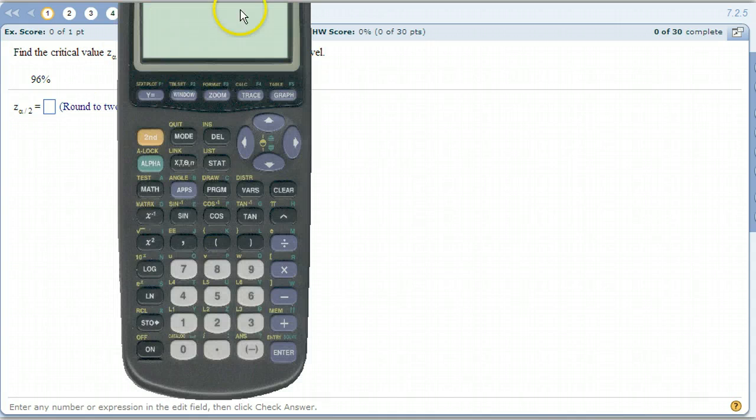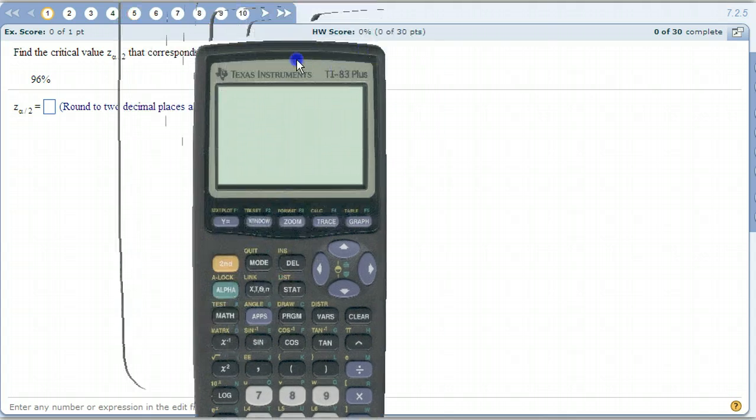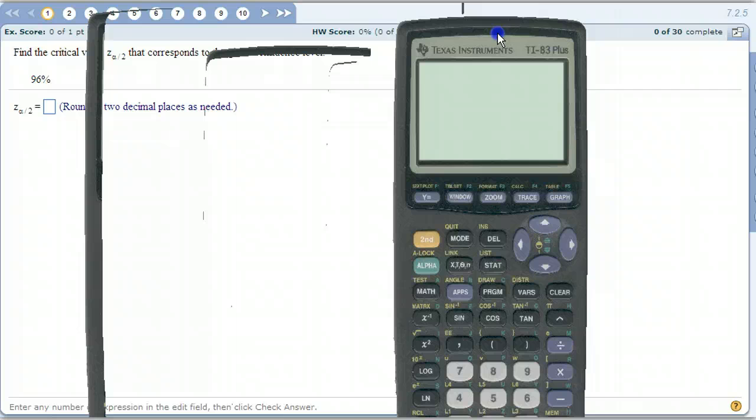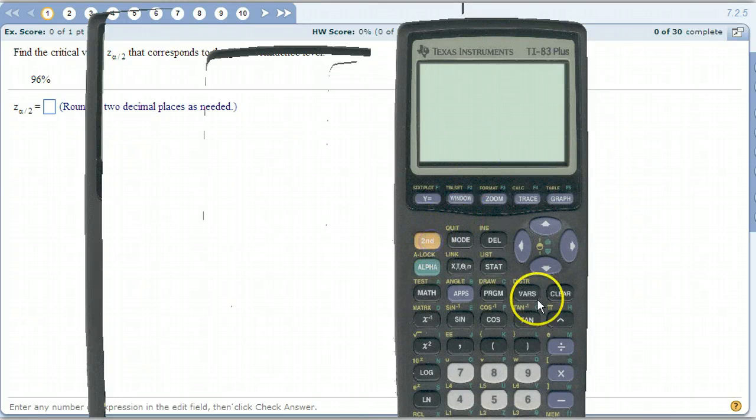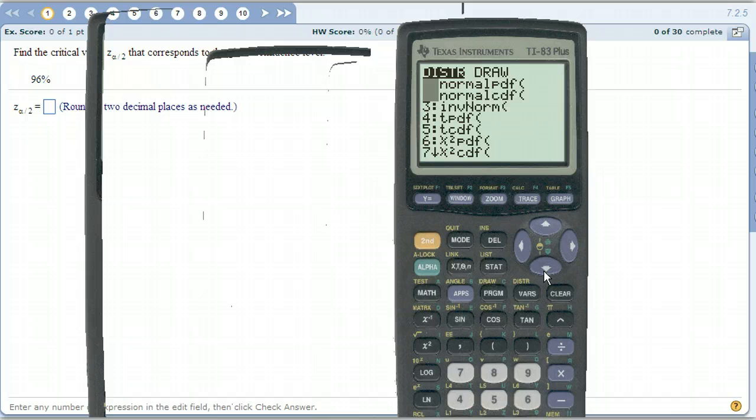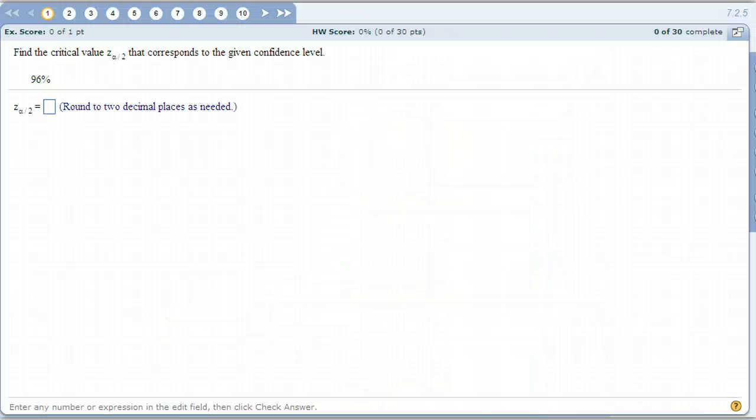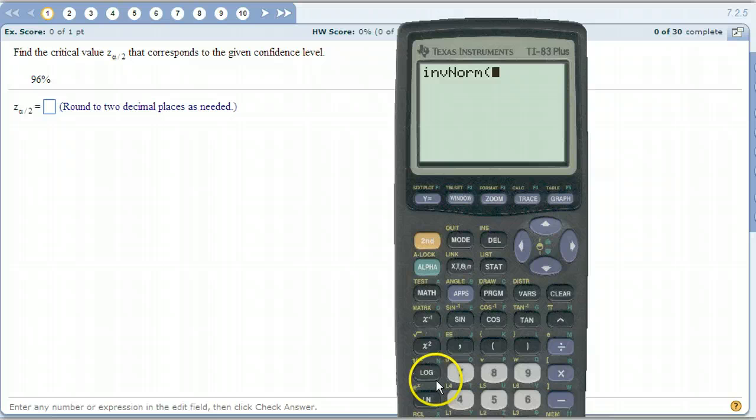So that's the job of the inverse normal. Remember, the inverse normal takes in area, area to the left, and it returns a Z score.